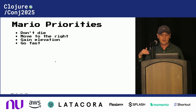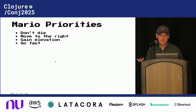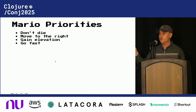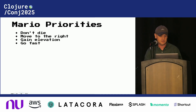These are the priorities we're going to use to search towards that goal. In general, we don't want Mario to die; we like it when Mario moves to the right; we want Mario to gain elevation because it's easier to fall than to climb; and fast Mario is better than slow Mario. This estimate of how far we are from the goal is pretty rudimentary, but in a lot of practical use cases, a very cheap rudimentary estimate really does make a big difference in speeding up your search.